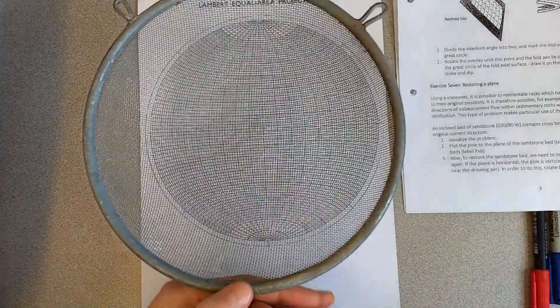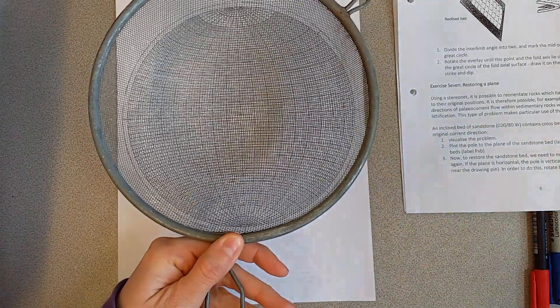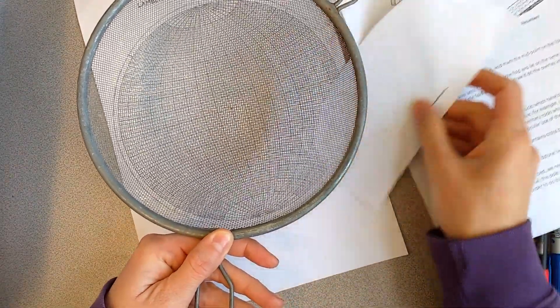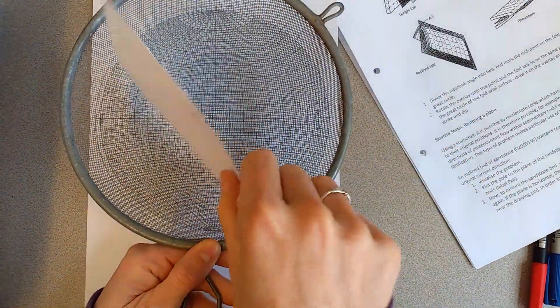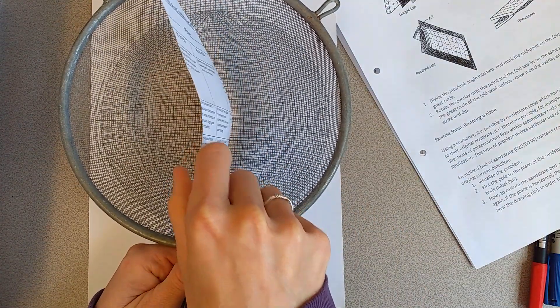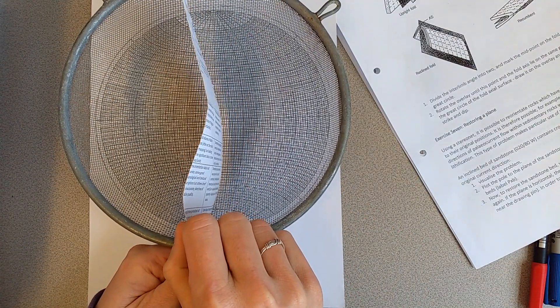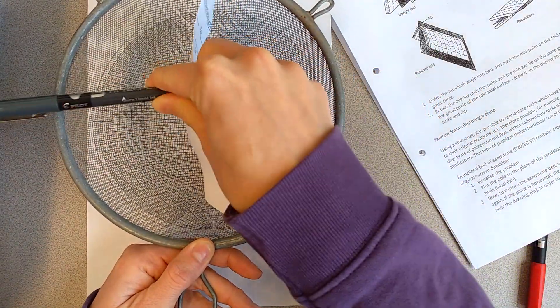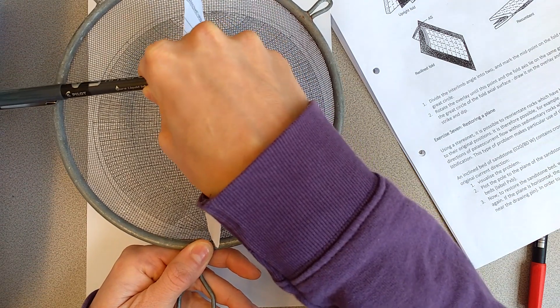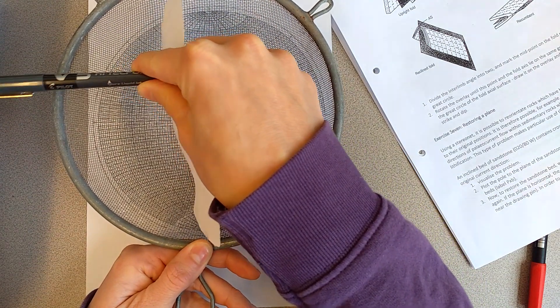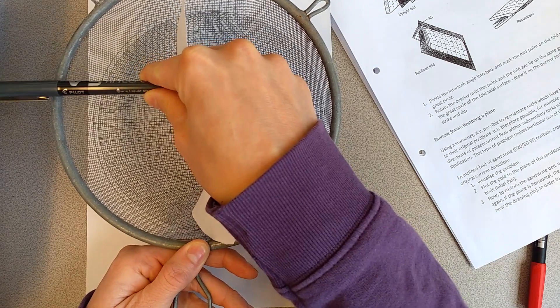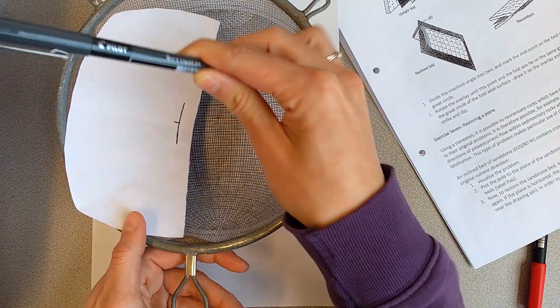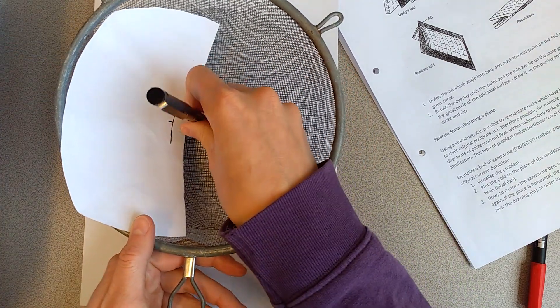If I just show you with my sieve quickly. If we're going to plot a plane it's going to plot as a line or a great circle on our sieve and the pole for that plane is at 90 degrees. If we have a vertical plane then the pole is at the edge of the stereonet.